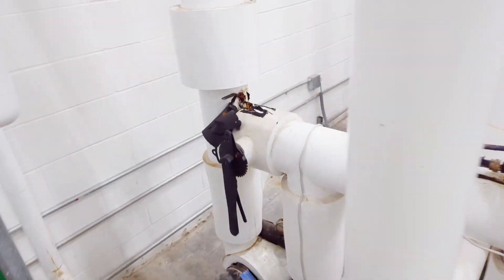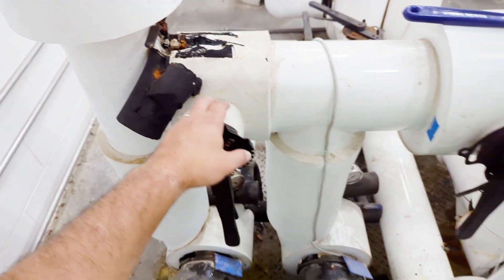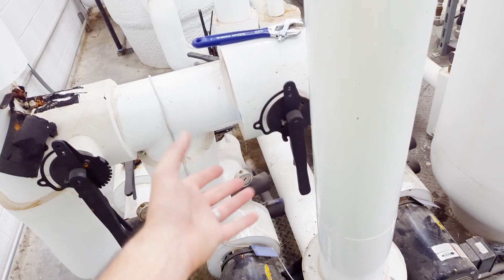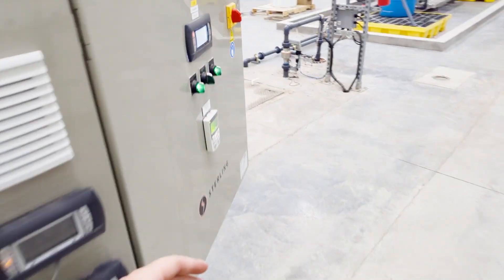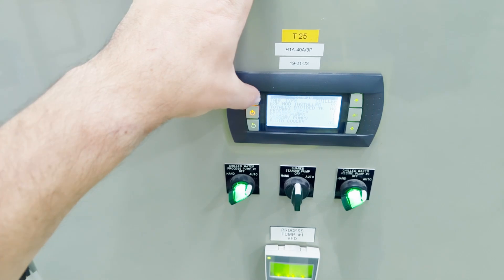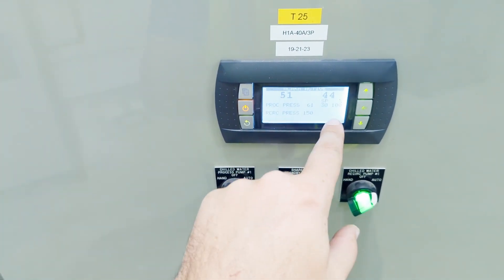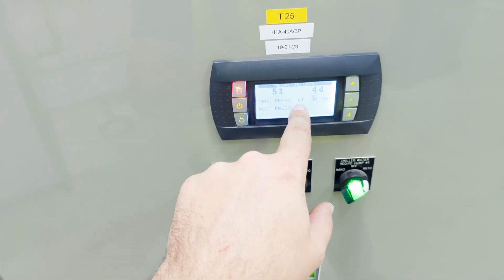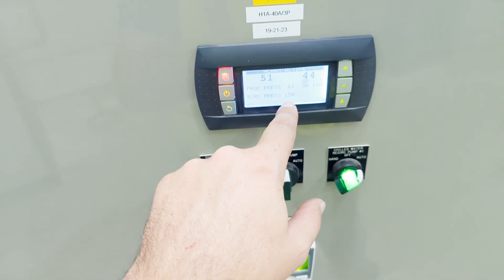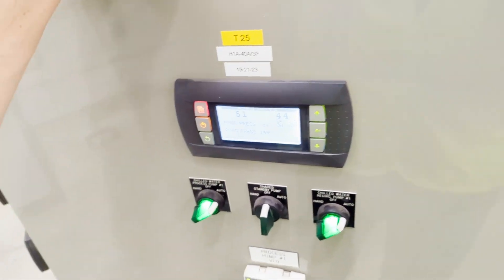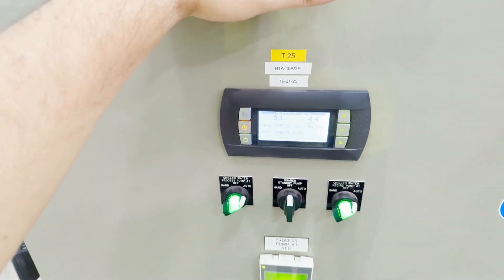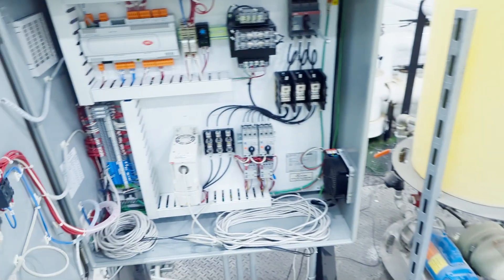We're working on this Sterling system today. The complaint came in of it having a flow issue, kept having flow alarms. We're running over 120 psi on the process and recirculate was running 150. This is running to a processing tank further down in another section of the plant.